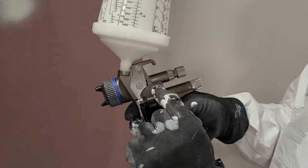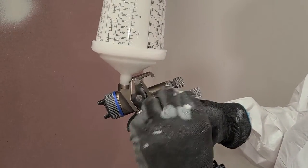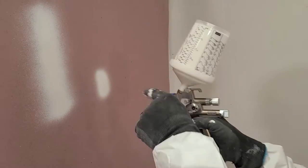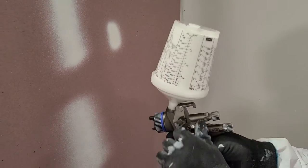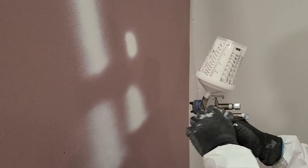So here is the spray pattern adjustment. We turn it all the way clockwise, that's all the way tight. And all the way counterclockwise is all the way wide. We're going to want it somewhere in the middle, somewhere like so, because we're going to start with the edges.